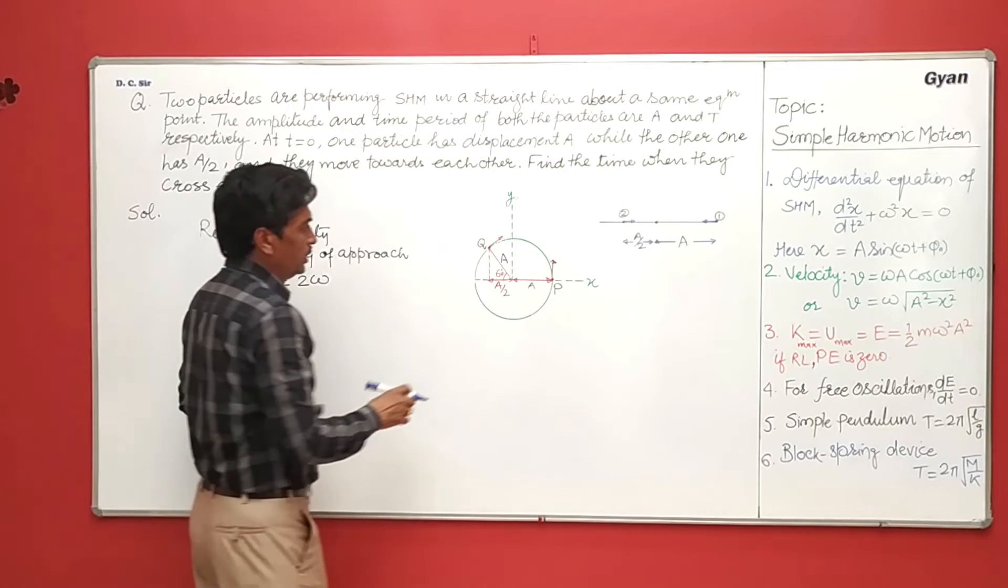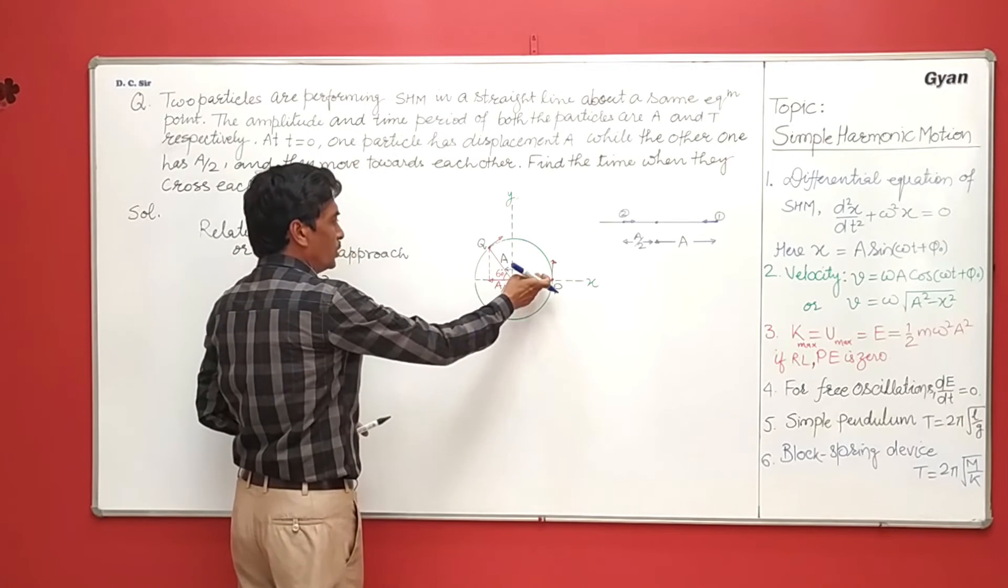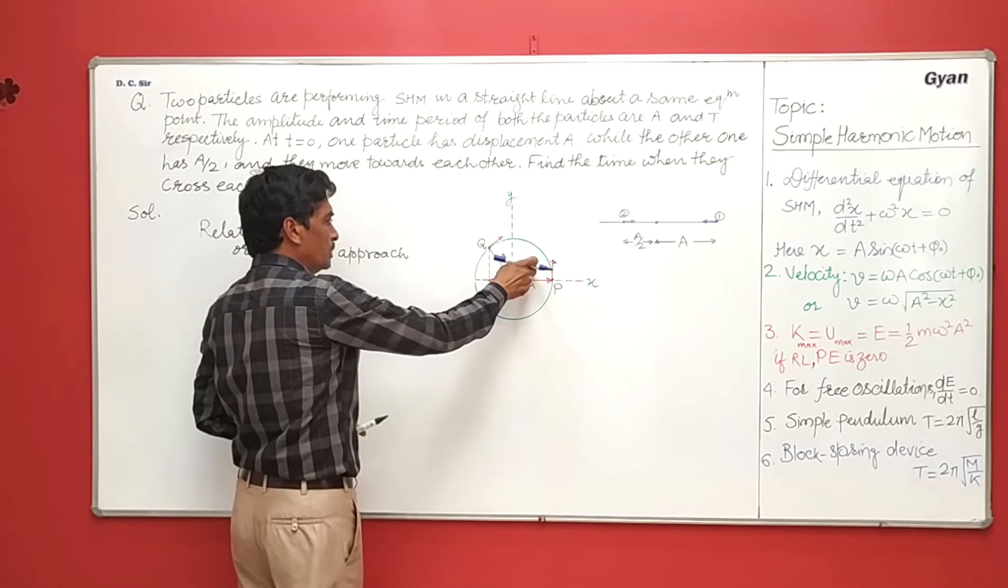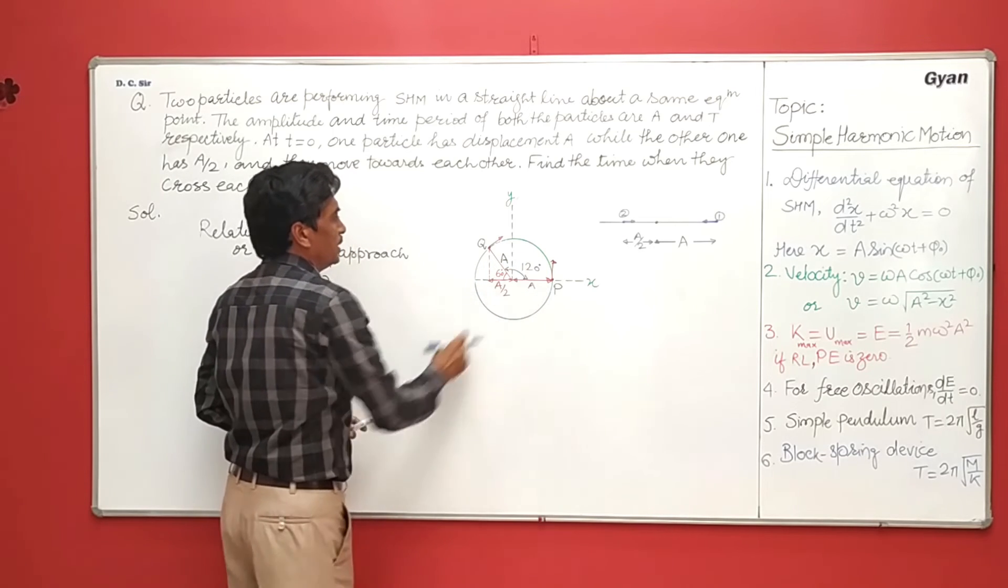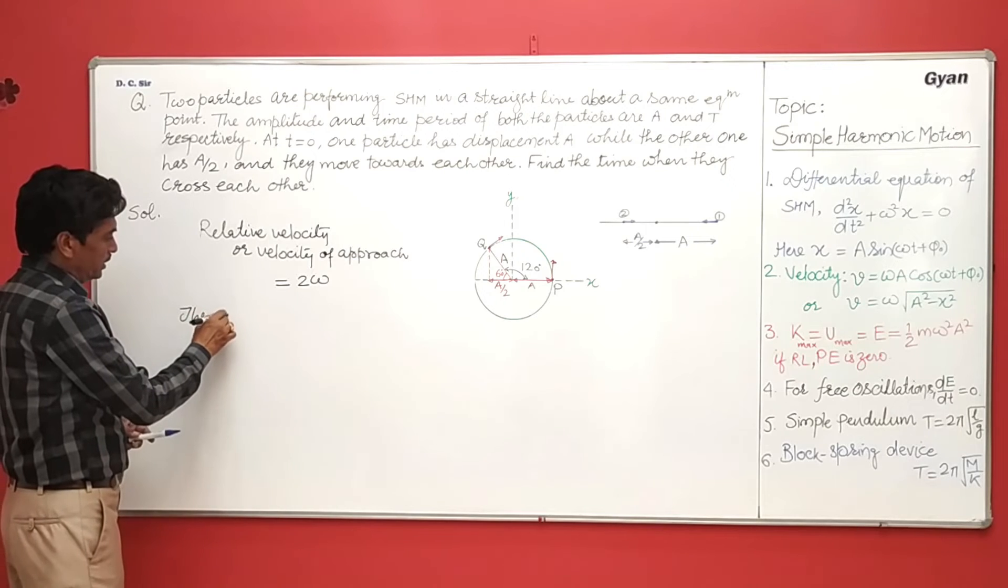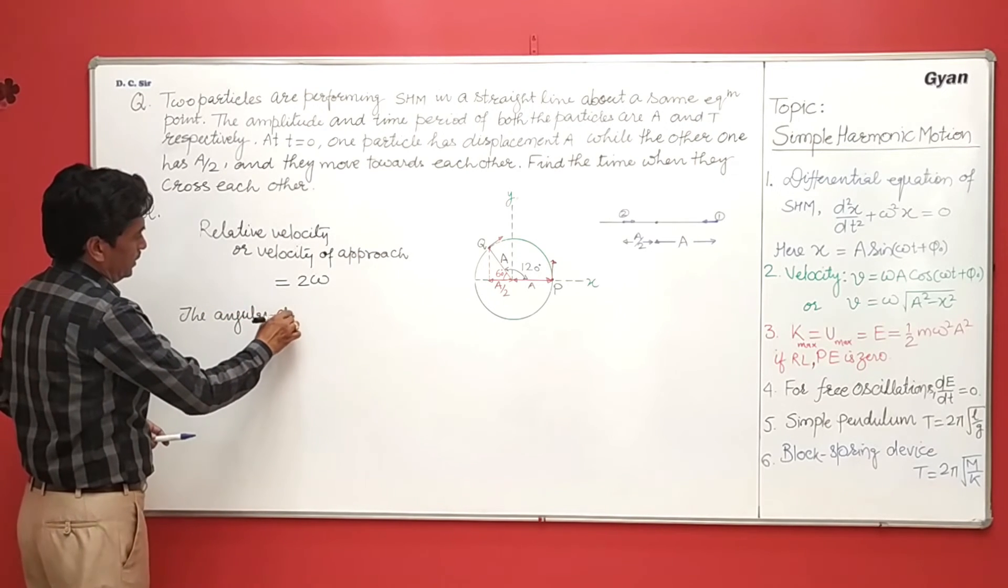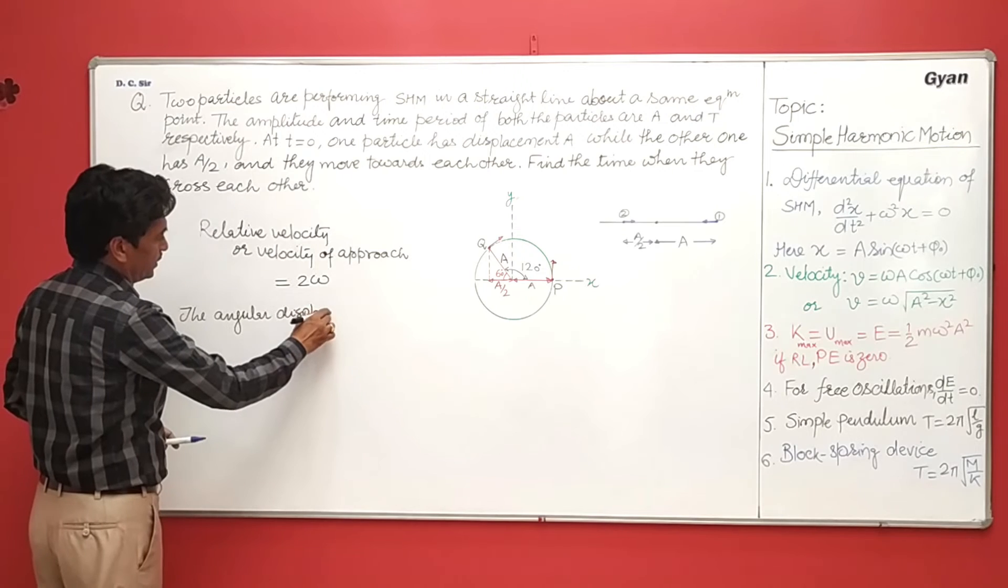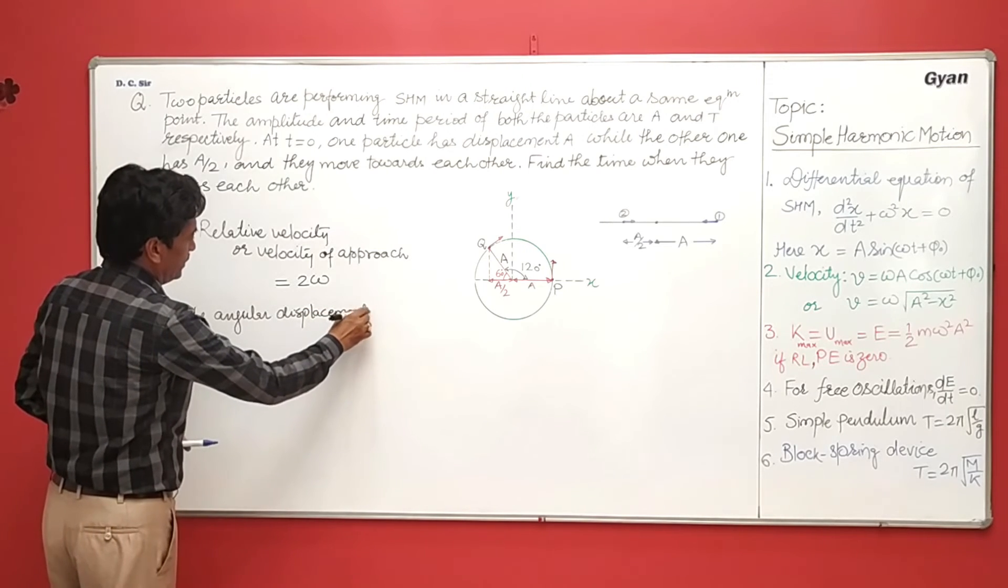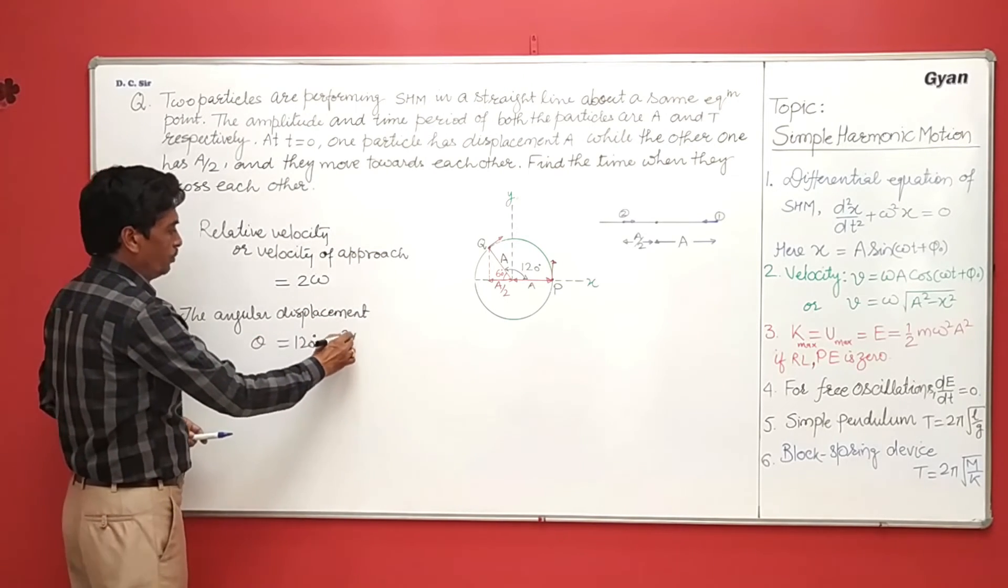Now angles to be covered. This total is 180 and this is 60, so it remains only 120. So the angular displacement theta is equal to 120 or 2 pi by 3.